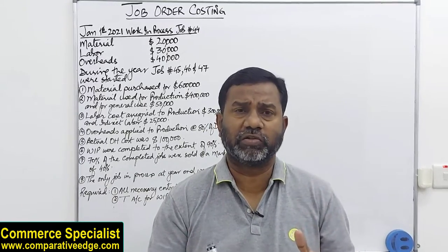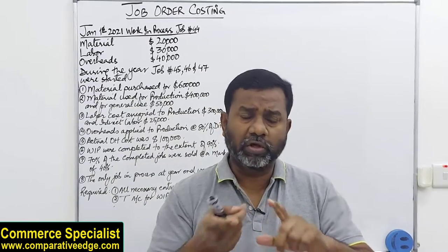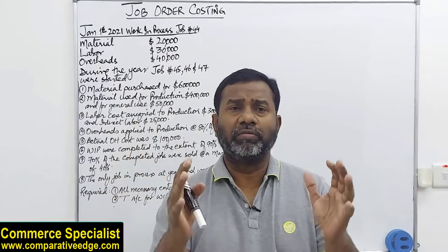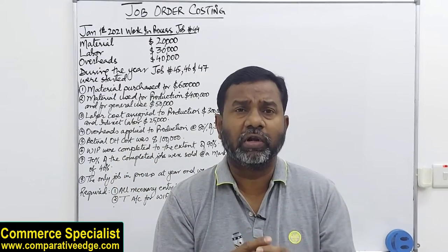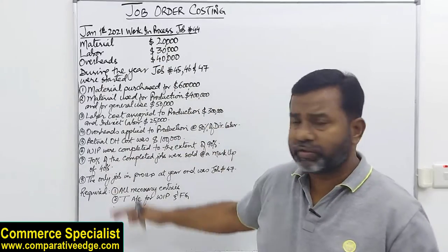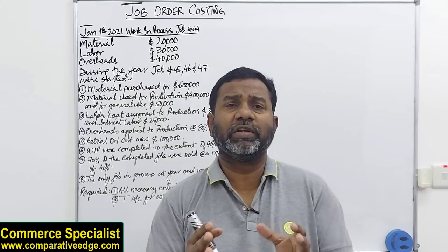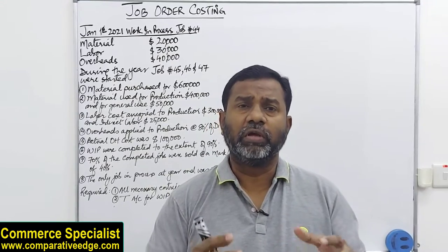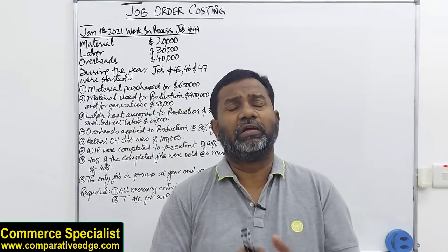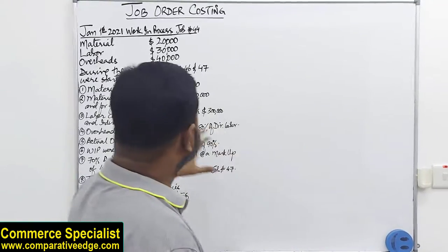When we are working on jobs, we have to take into consideration a few important things: the cost of material used, the cost of labor, the cost of overheads, and the total manufacturing cost for completing the job, plus some profit. I've created a question here, and I'll be explaining step by step the different double entries we give in a job order costing system.